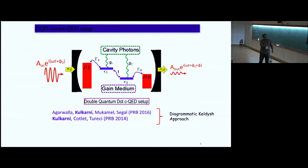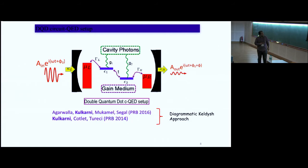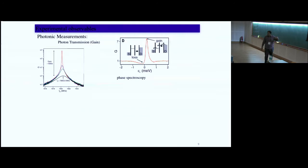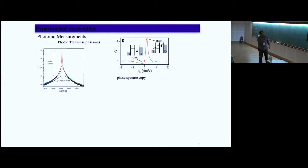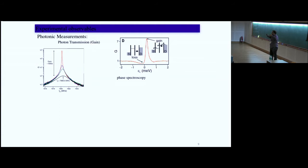Think of the double-quantum-dot circuit QED setup as the gain medium. Experiments create a finite DC bias, let current run through, and ask: what is the gain in the photonic sector? There is enormous gain as a function of epsilon_L — the level of the quantum dot. Unlike ordinary atoms, you can tune these levels, so the parameter space is widely tunable.